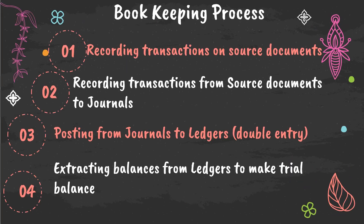That detailed transaction that has been recorded becomes a basis for posting that information to the journals, then from the journals to the ledgers, and then from the ledger, something we call a trial balance is created. After the transactions have been written in detail like that, that is where the bookkeeping ends.